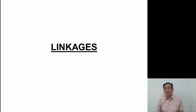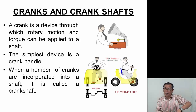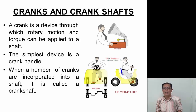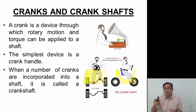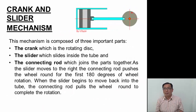Now we come to the topic of linkages. What we have is a crank and a crankshaft. The crank is the part that turns — a door handle is something like a crank. The simplest device is a crank handle. The crankshaft is what you see in the picture where the pedals are applied.